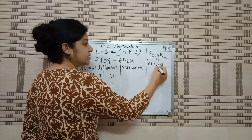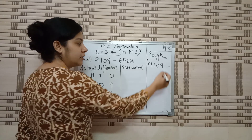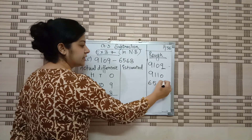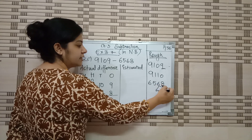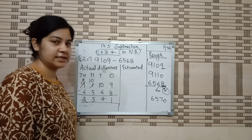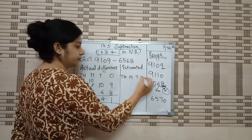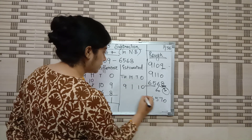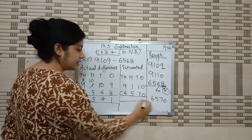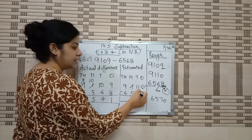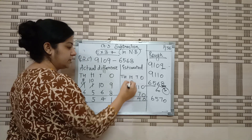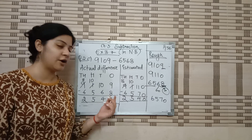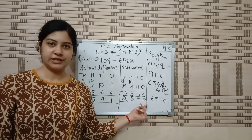Now find the estimated difference. For 9109, the tens place has 0, and the units digit is 9, so we round off to 10 — the next tens. For 6568, the tens place is 6, and units is 8, so we round off to 70. The hundreds and thousands places stay as it is. Now subtract: 0 minus 0 is 0, 1 minus 7 not possible — borrow, 11 minus 7 is 4. Then 10 minus 5 is 5. And 8 minus 6 is 2. Estimated difference is 2540. Verify: rounding 41 gives 40, so the answer is correct.